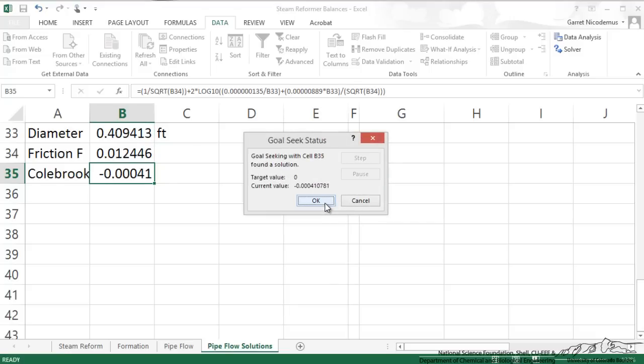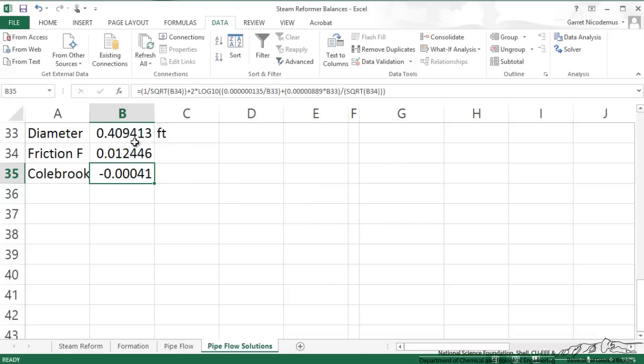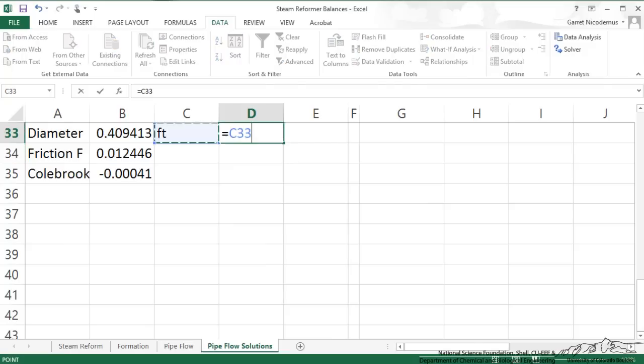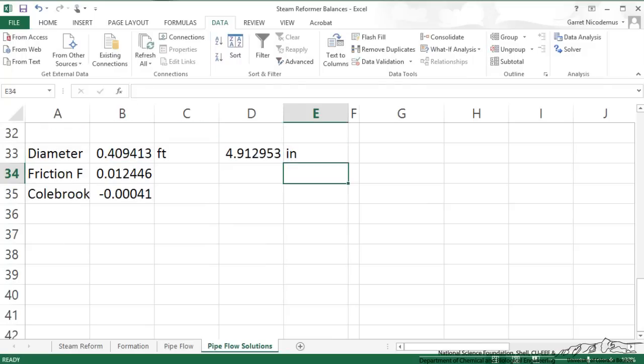We get a value of 0.409. If you recall in the last screencast, based on guessing and checking, we said 0.41 was pretty close. When we convert this in terms of inches, we get 4.912 inches for our diameter. Although it may not be worth custom making a pipe to meet that specification, it is a good starting point to do some analysis to see if we can use a 5 inch pipe.